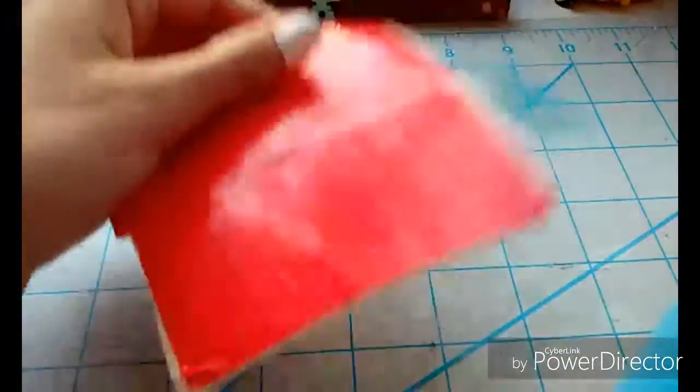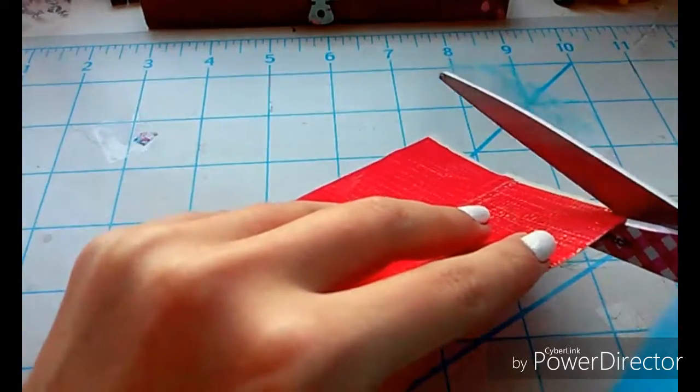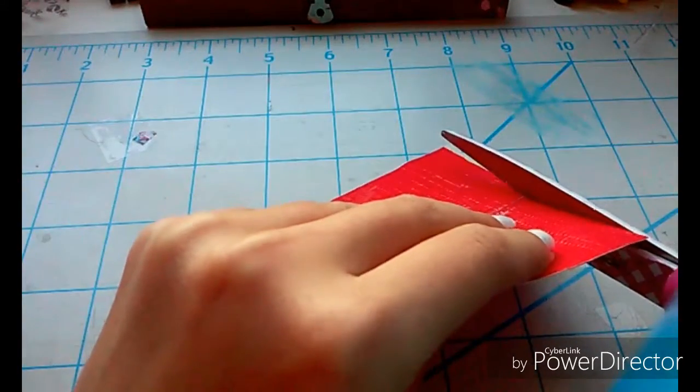So then you're just going to go ahead and cut any of the excess on the sides. Just be sure that no matter how much you cut, it's still square.